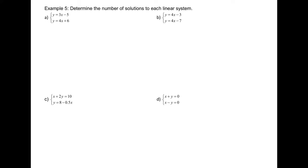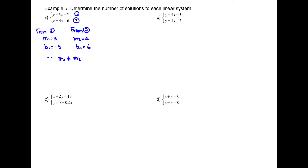Example 5. Determine the number of solutions to each linear system. Part A. Label equation 1 and equation 2. From equation 1, the slope is 3 and the y-intercept is negative 5. From equation 2, the slope is 4 and the y-intercept is 6. Since the slopes are not equal, therefore there is 1 intersection — one solution.